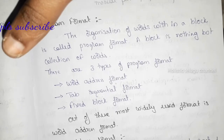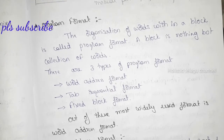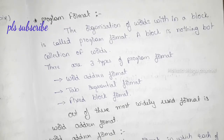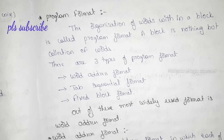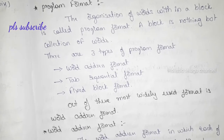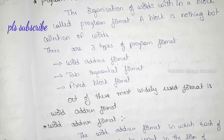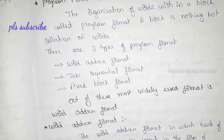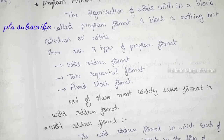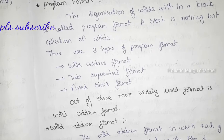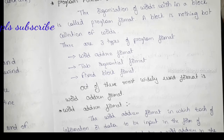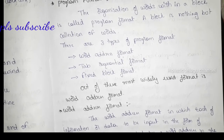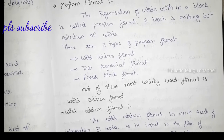In the last video we talked about NC words, M words, G words, and words. Now we are going to talk about program format. There are three types: word address format, tab sequential format, and fixed block format. In general, we are going to use the word address format.